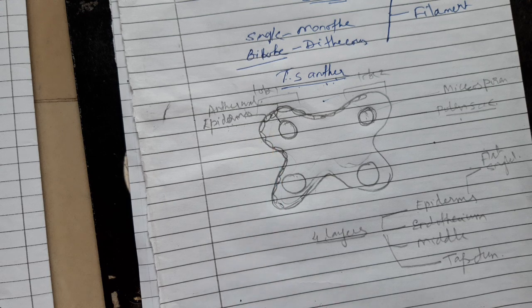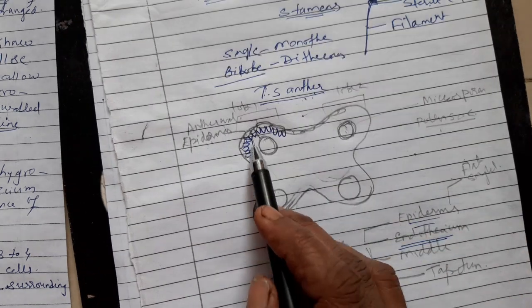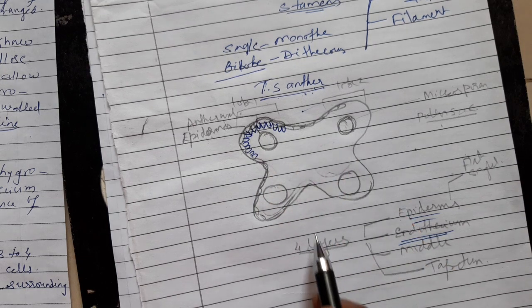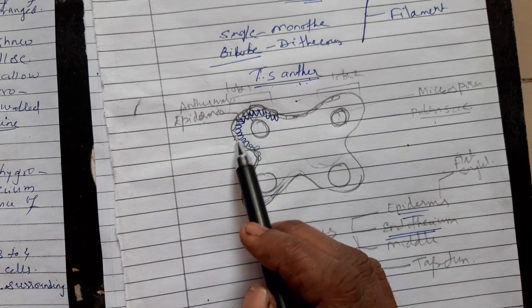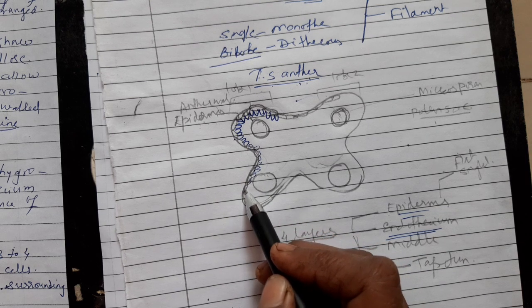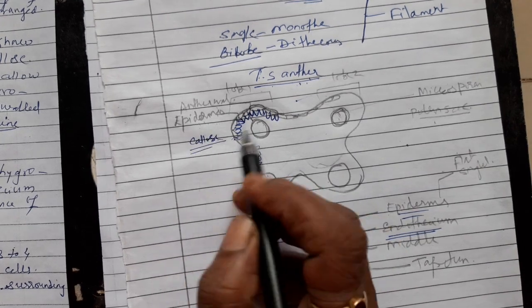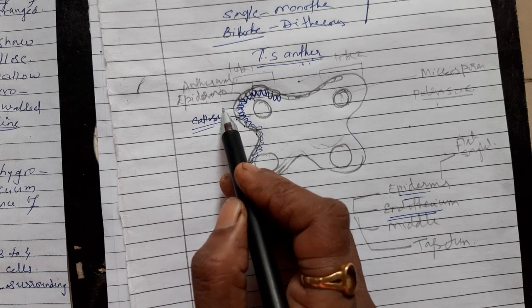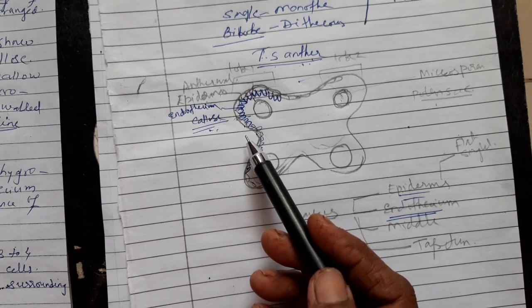The second layer is the endothecium. It is internal to the epidermis. It is common to all four pollen sacs and consists of a single layer of radially arranged cells. An important characteristic of the endothecium is the presence of callose — a fibrous thickening present in this layer.